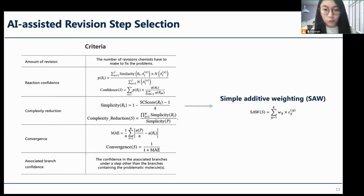Once a pool of candidate revision steps for each problematic molecule is obtained, AI further adopts a simple additive weighting algorithm to rank these candidates based on a list of criteria derived from the literature review and the feedback from the experts.